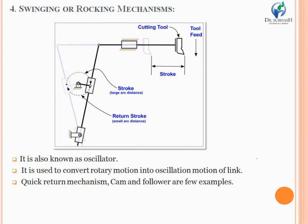The fourth type of special mechanism is the swinging or rocking mechanism, also known as an oscillator. It is specially used to convert rotary motion into oscillatory motion. The output link swings, rocks, or oscillates through an angle less than 360 degrees. A typical example of this mechanism is found in the shaper machine used for workshop operations.